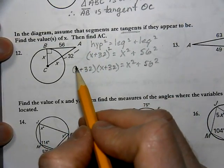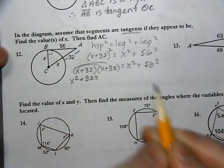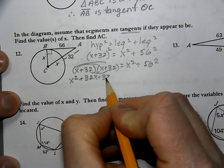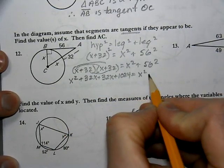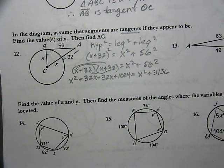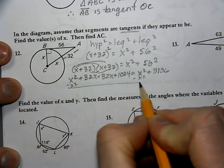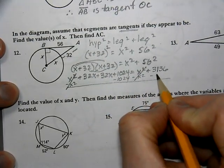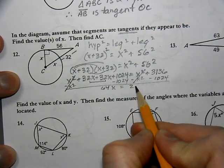You're going to use FOIL. You can use the box method too. We're going to say x times x is x squared, x times 32 is 32x — notice how x multiplied both terms. Then the 32 multiplies both terms, giving 32x again, and 32 times 32 is 1,024. Then 56 squared is 3,136. From this point we go back to algebra — move like terms to the same side of the equal sign, which cancels x squared. Subtracting 1,024 leaves 64x equal to 2,124. Wait — that should be 2,112, giving us x equals 33.